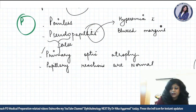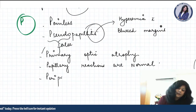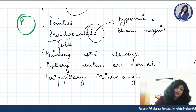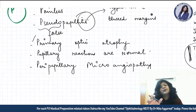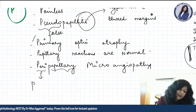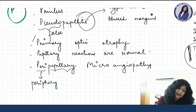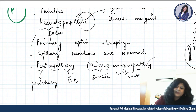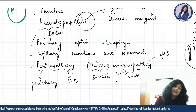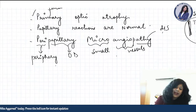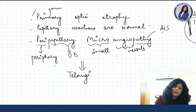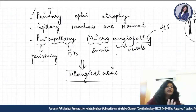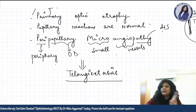In Leber's hereditary optic neuropathy, pupillary reactions are normal. We also get peripapillary microangiopathy — disease of small blood vessels in the periphery of the optic disc — called telangiectasias.